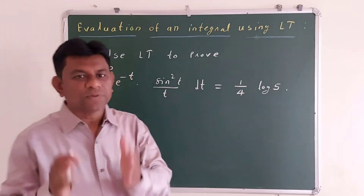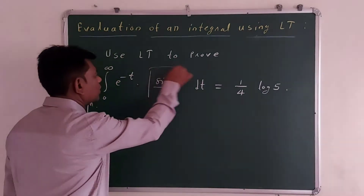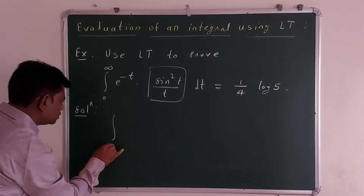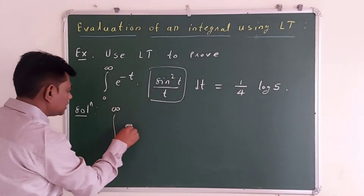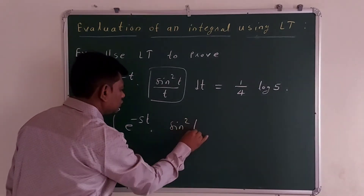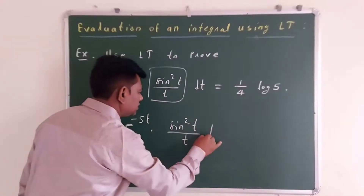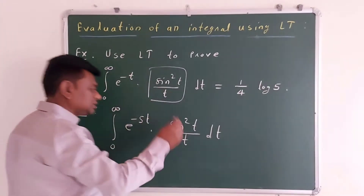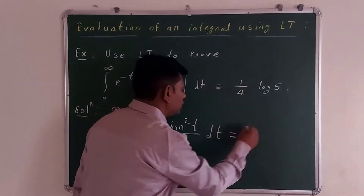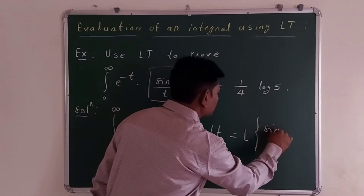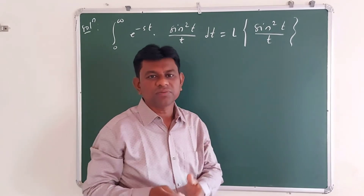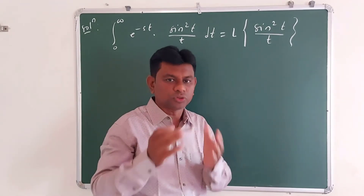Now for the solution, the definition of Laplace transform of sin squared t over t is the integral from 0 to infinity of e to the power minus st times sin squared t over t dt. This integral is the Laplace transform of sin squared t over t. Now sin squared t equals 1 minus cos 2t over 2.